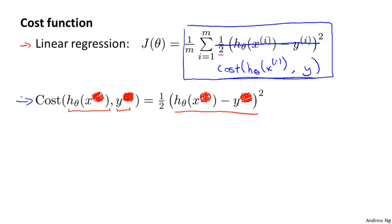This cost function worked fine for linear regression, but here we're interested in logistic regression. If we could minimize this cost function plugged into J, that would work okay. But it turns out that if we use this particular cost function, it would be a non-convex function of the parameters theta.